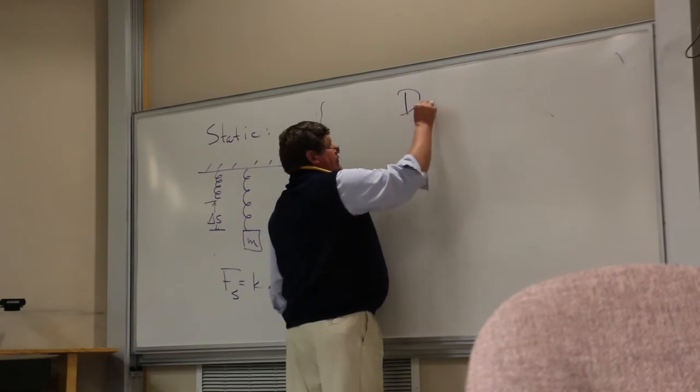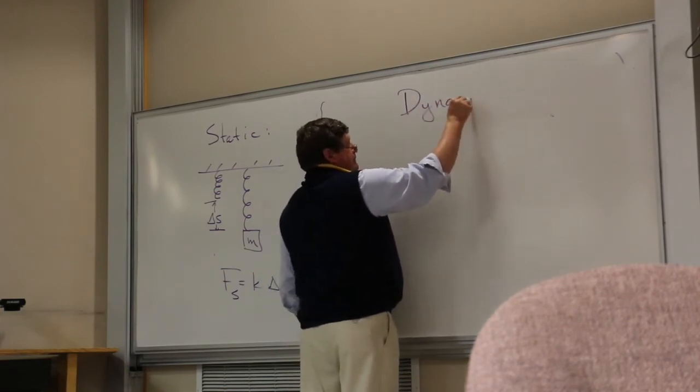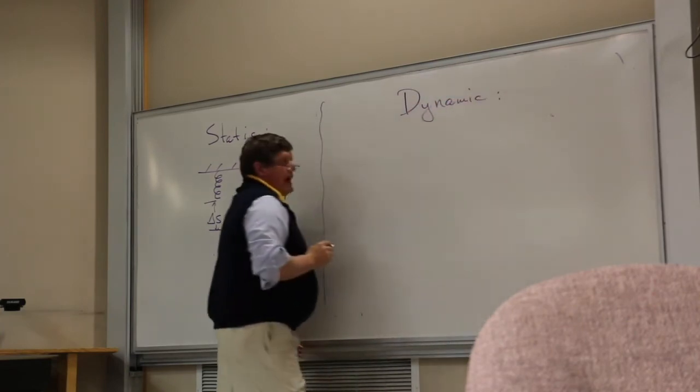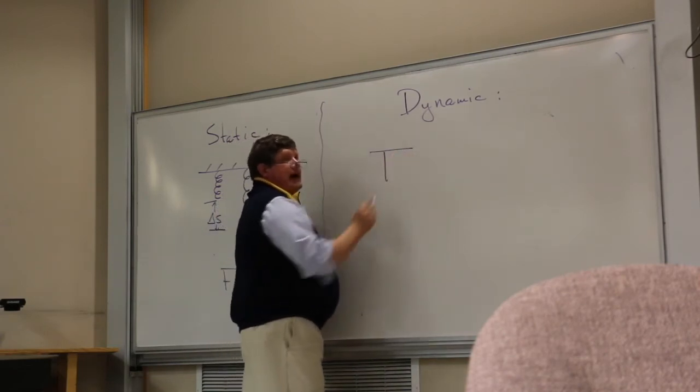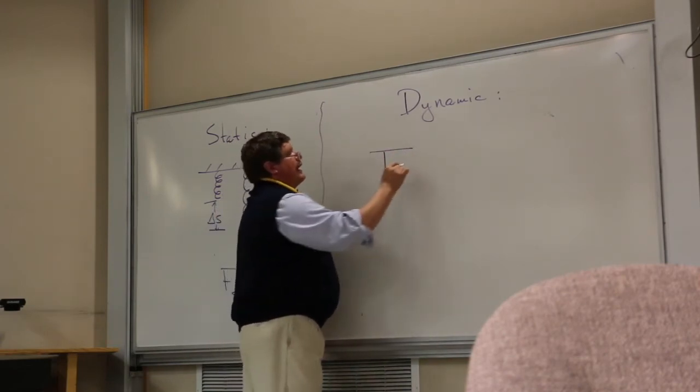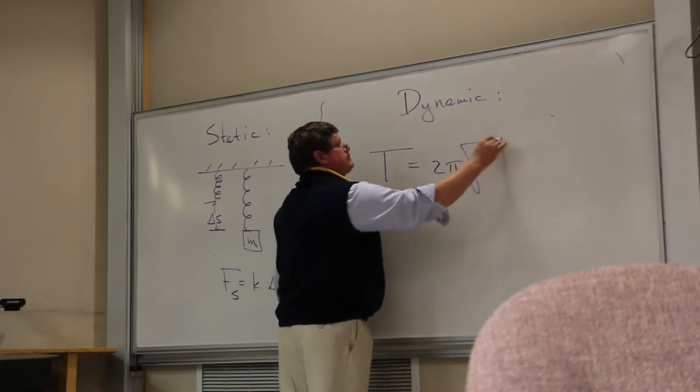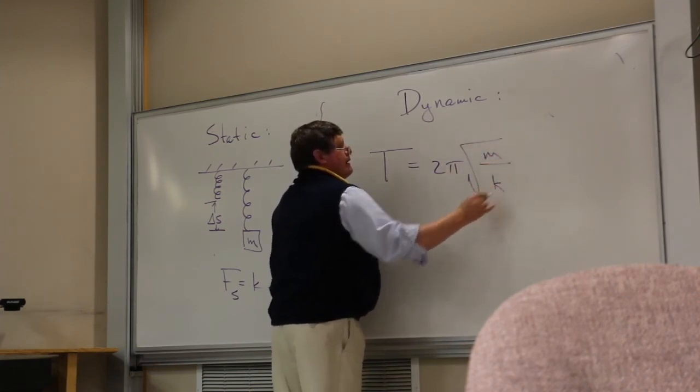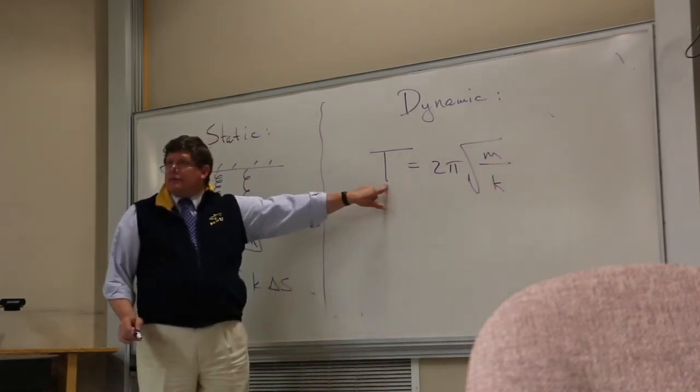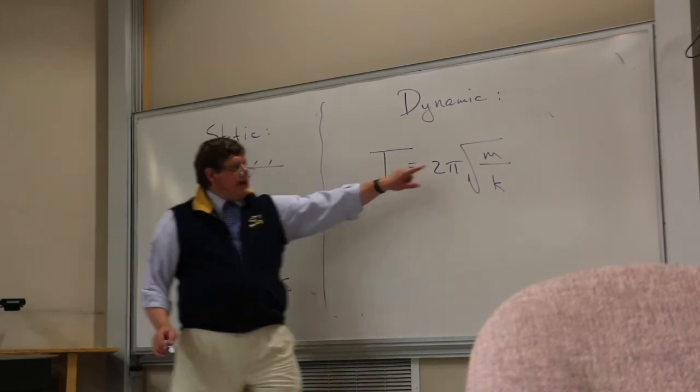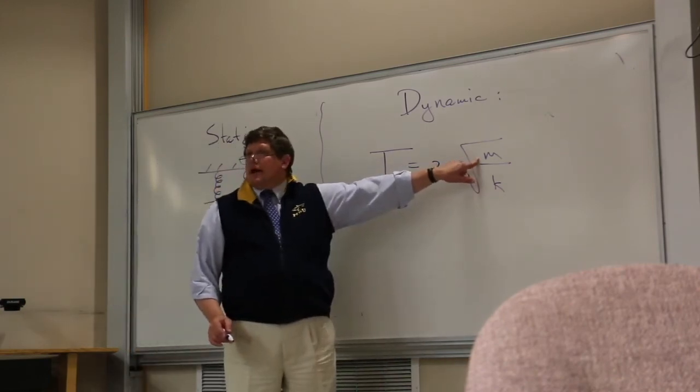The other method, called the dynamic method, has us bounce that mass up and down on the spring and use this formula. If we know the timing, the period of one oscillation, and we know the mass that's going up and down,